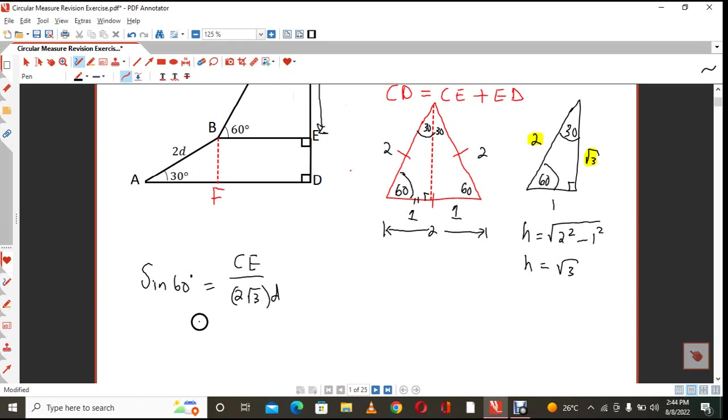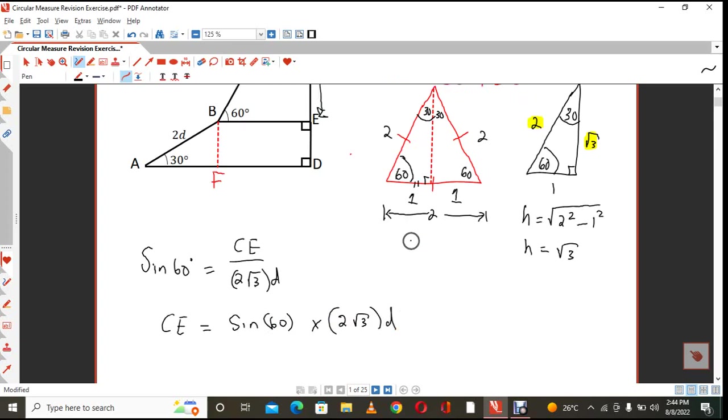So before maybe we get there, let's just cross multiply. So CE is going to equal to the sine of 60 degrees multiplied by 2 times root 3 times D. But we know already what the sine of 60 degree is. The sine of 60 degree is root 3 over 2 from our special angles there, multiplied by 2 times root 3 times D in order for us to find what CE would be.